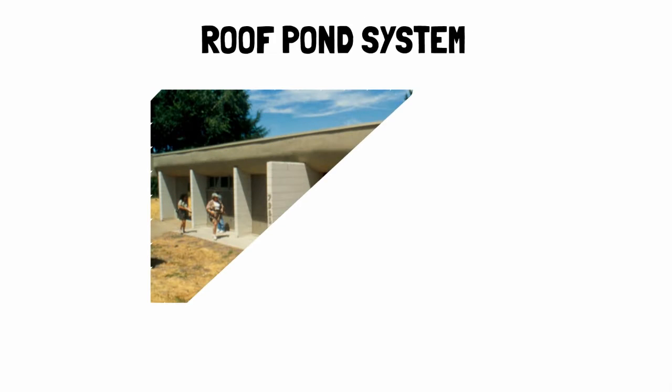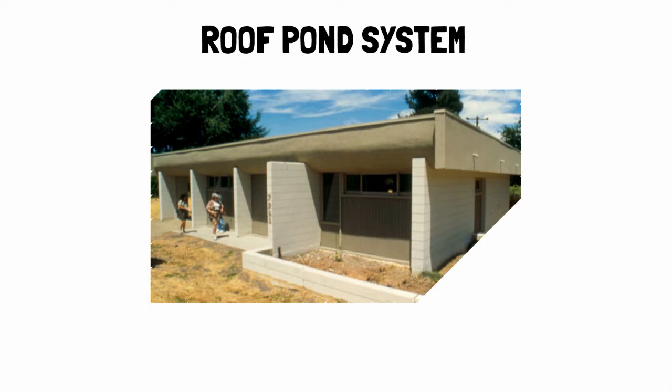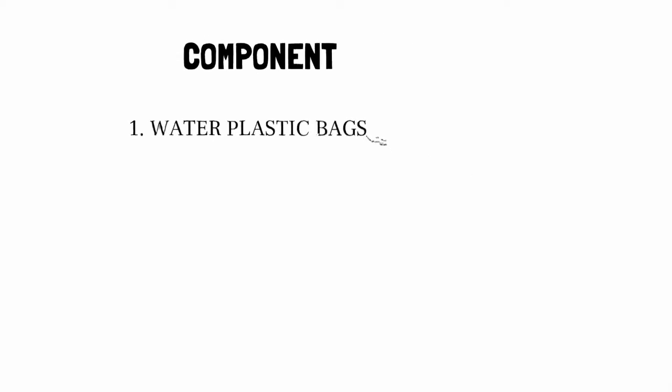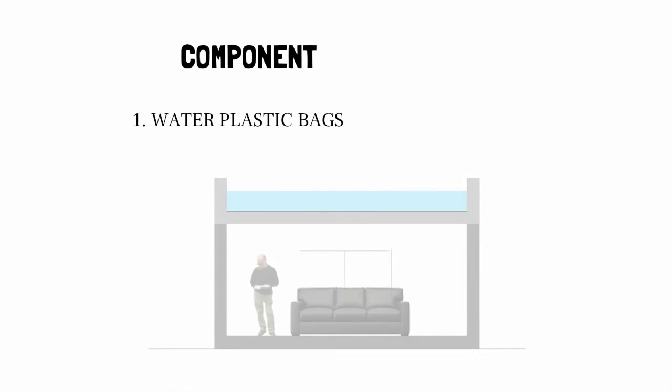Roof Pond System is a passive heating and cooling technique for a building. In this system, water is used for heating and cooling because it has high thermal storage capacity. Water is placed on a roof in a plastic bag which is exposed to sun.